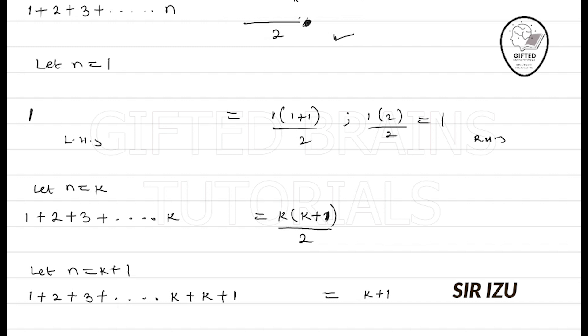So I have my first n, I substitute k plus 1 into it. Then my bracket n plus 1 becomes k plus 1 plus 1, all over 2. This right-hand side gives us k plus 1 times k plus 2 over 2. This is what the right-hand side gives us.